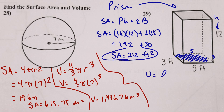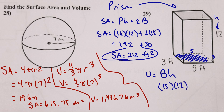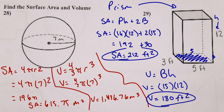Volume of the rectangular prism is length × width × height — or using the prism formula: area of base × height. Area of base = 15, height = 12, so volume = 15 × 12. 10 × 15 = 150, 2 × 15 = 30, so volume = 180 cubic feet. There's the volume and surface area for number 29.